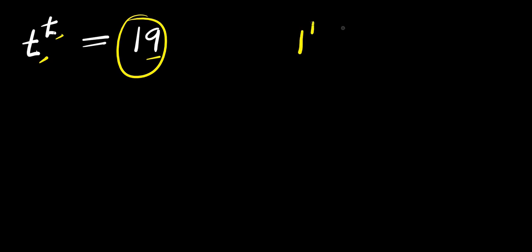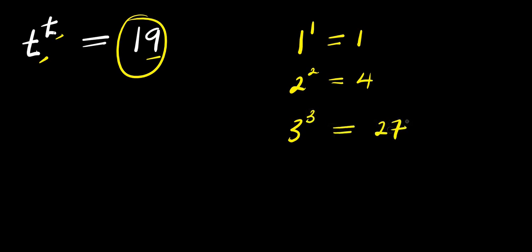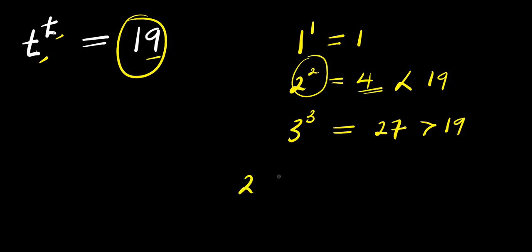So for instance, if you have 1 to the power of 1, this is 1. If you consider 2 to the power of 2, this is 4. If you consider 3 to the power of 3, this is 27. Now, 4 is obviously less than 19, that means 2 power 2 is less than 19, and 3 power 3 is giving us 27, which is greater than 19. So we consider the range of values of t: 2 is less than t, while t is less than 3.